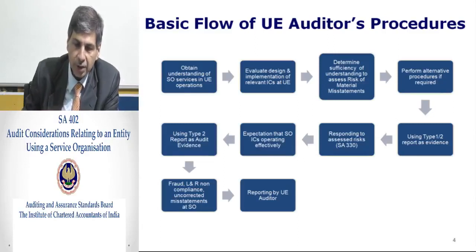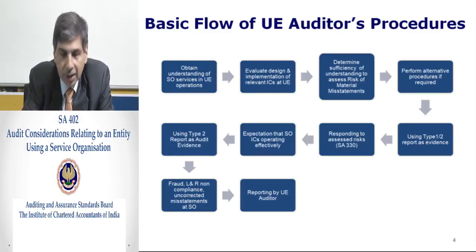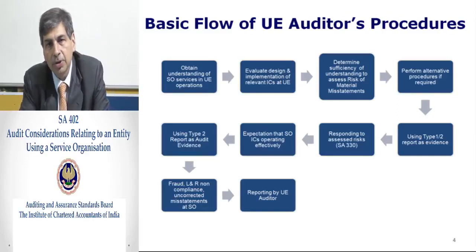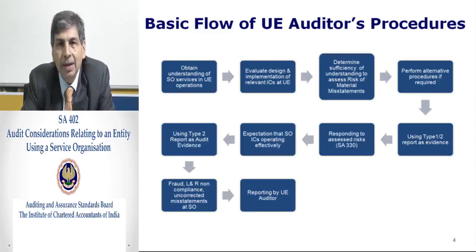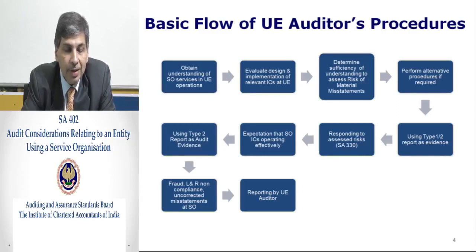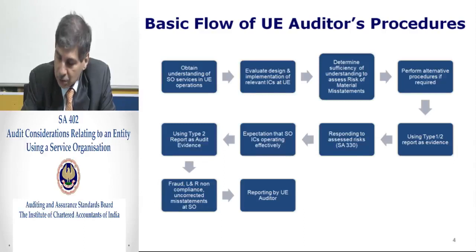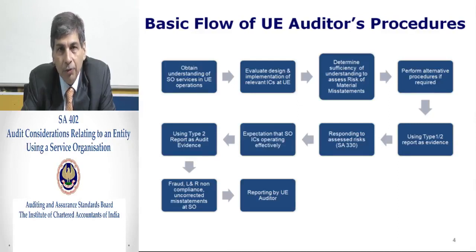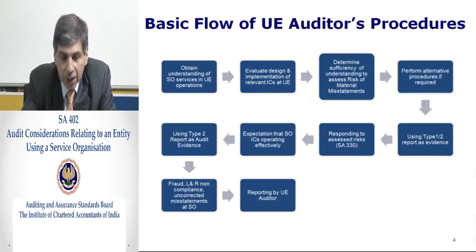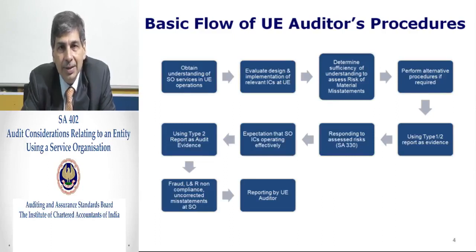The basic flow of the user entity auditor's procedures involves, first, obtaining an understanding of the service organization in user entity operations — understanding the nature of services the service organization is providing and the materiality of transactions being processed. Second, the auditor is required to evaluate the design and implementation of relevant internal controls at the user entity, including those applied at the service organization, in order to report on internal controls over financial reporting operating at the user entity. The auditor then needs to determine the sufficiency of understanding to assess the risk of material misstatement, as captured in SA315 and SA330.